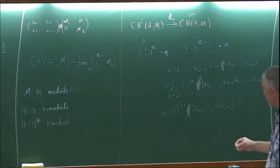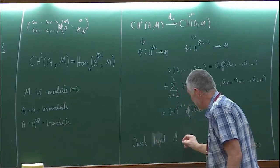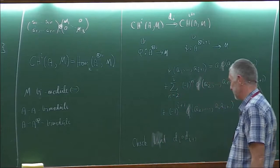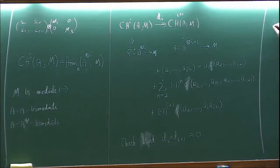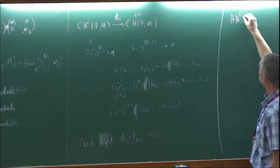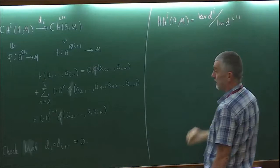Check that d^i composed with d^{i+1} is equal to zero. Then we define the cohomology H^i(A, M) equal to the kernel of d^i divided by the image of d^{i-1}.